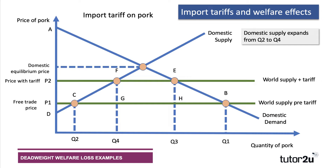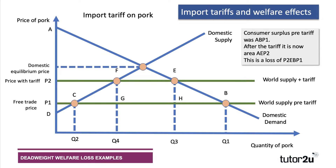Our focus here is on welfare. The consumer surplus before the tariff was the big triangle A, B, P1. After the tariff, with higher prices P2, consumer surplus falls to A, E, P2 — and that's a big fall, a trapezium fall of P2, E, B, P1. So there's been quite a big fall in consumer surplus.